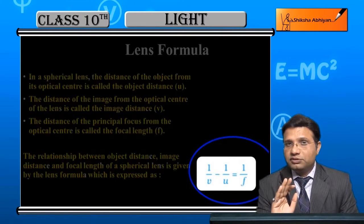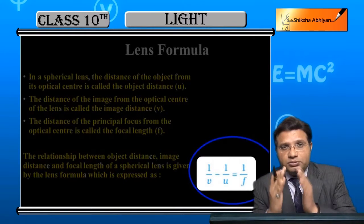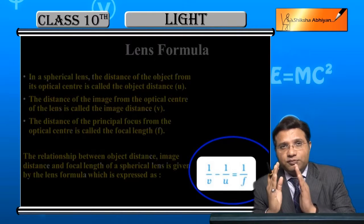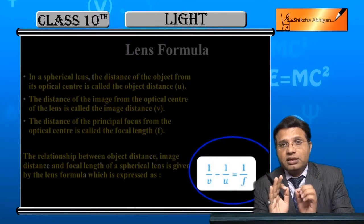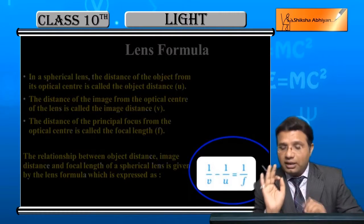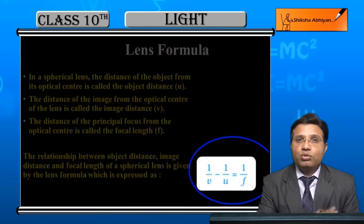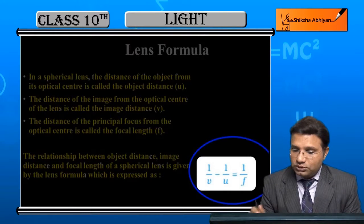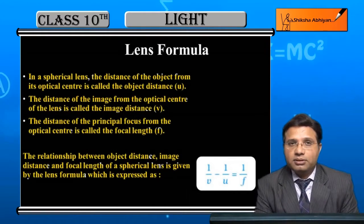ध्यान रहे, यहाँ पे sign convention जरूर use करना होगा। Sign convention का मतलब है — object distance, image distance, और focal length में कब positive sign लेना है और कब negative sign लेना है। उसका use करके आप lens formula के basis पे unknown quantity को find कर सकते हो।